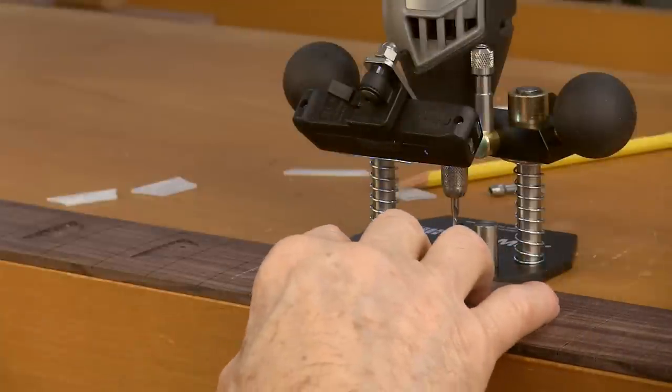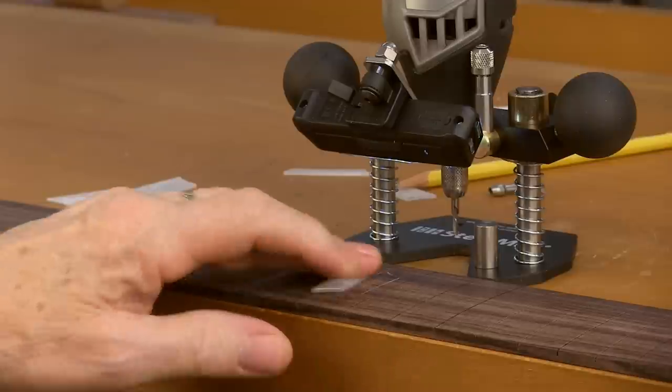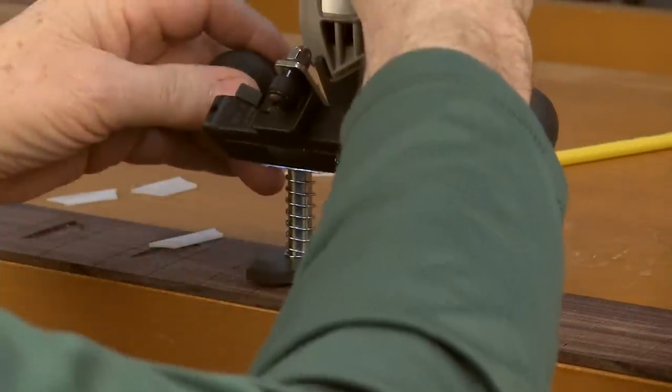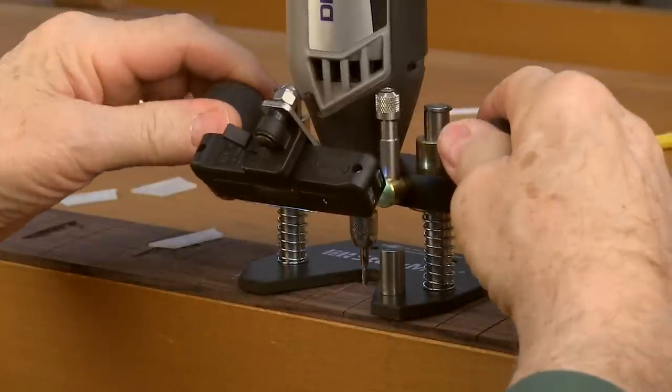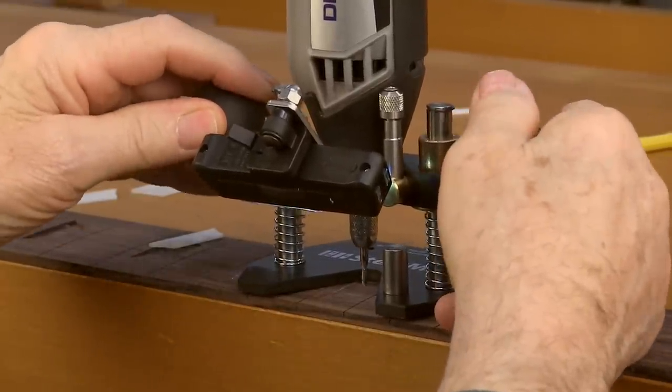Let's say I want to route a pocket for this Les Paul style crown inlay. Here's how I'll do it. Loosen the knobs and plunge until it hits the wood. Now you're zeroed out.